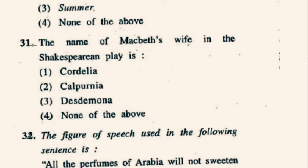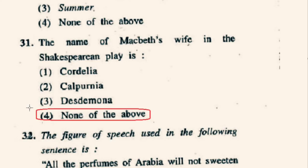Question number 31: The name of Macbeth's wife in the Shakespearean play is? The name of Macbeth's wife is Lady Macbeth, who later becomes the Queen of Scotland. So option 4th, None of the above, is the correct option.